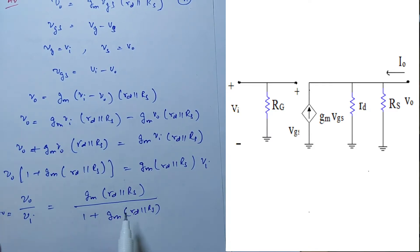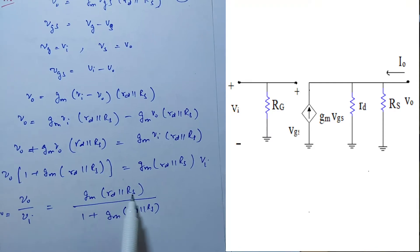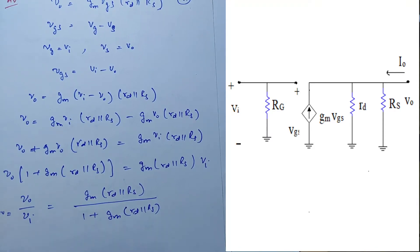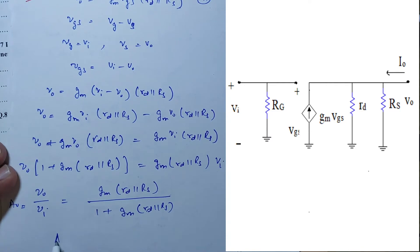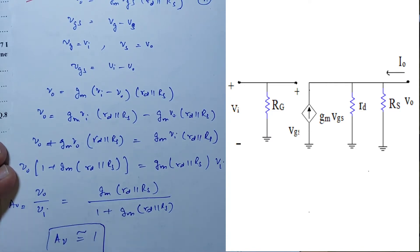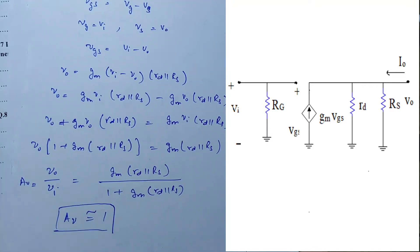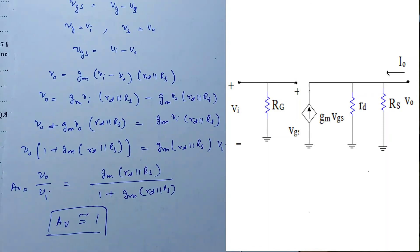Interestingly, the voltage gain factor is very close to one — it is nearly equal to one. This is a key property of the common drain configuration, also known as the source follower. We will compare different configurations in more detail later. This completes our discussion of the common drain configuration. Thank you.